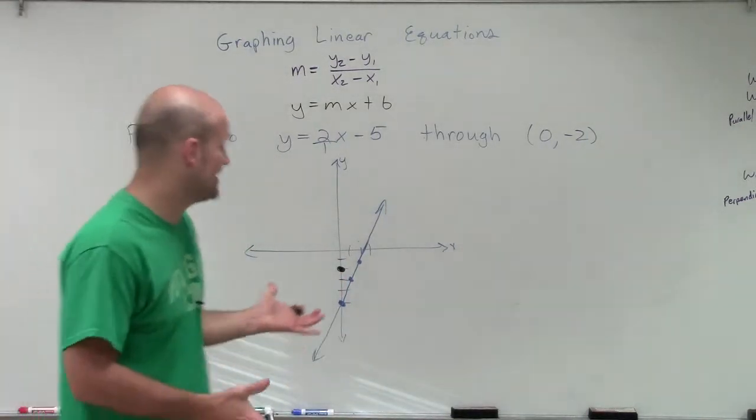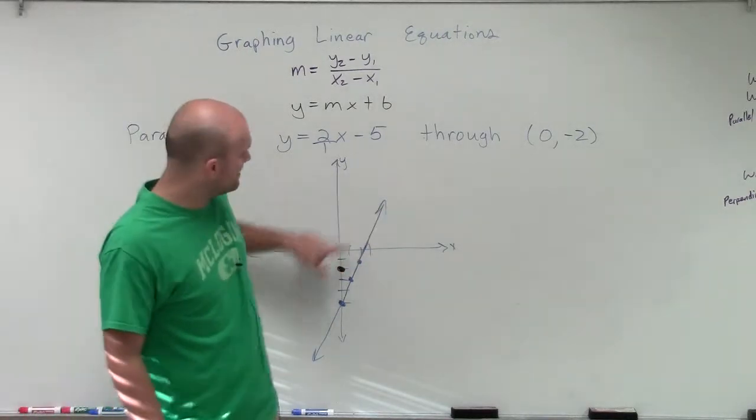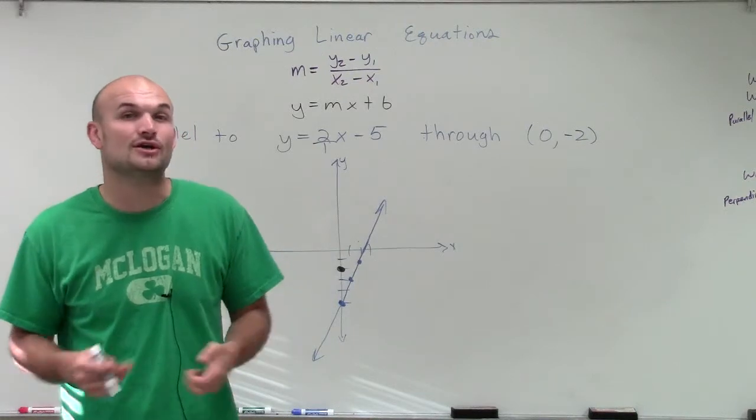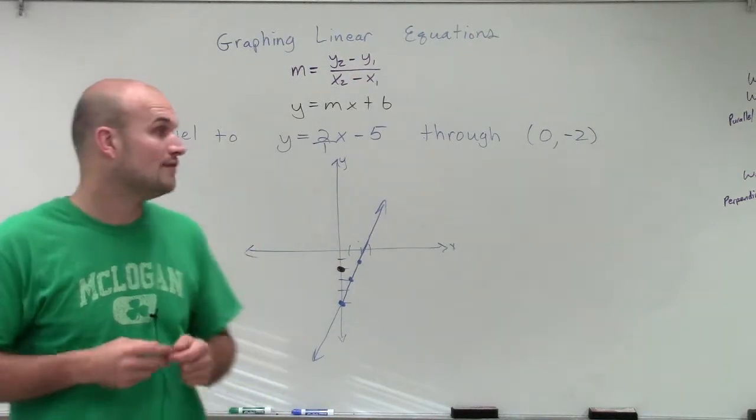Now, since the point that it has to go through is on the y-axis, I know that's going to be the y-intercept of the graph. So I can easily go ahead and find the equation of this line.